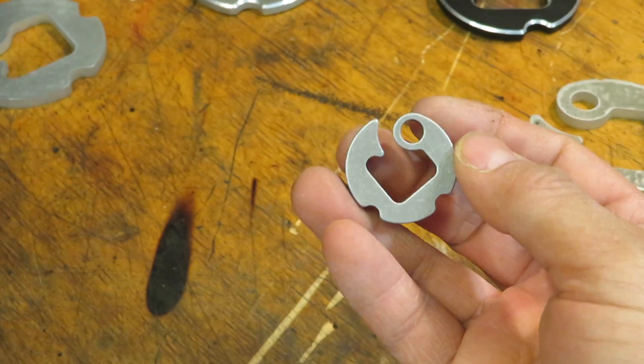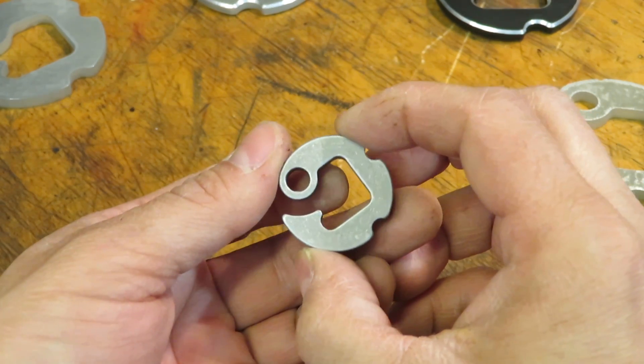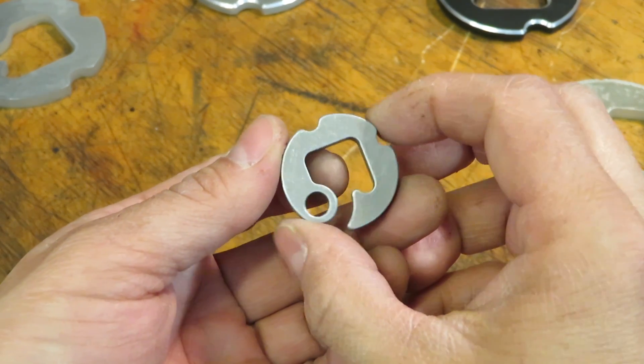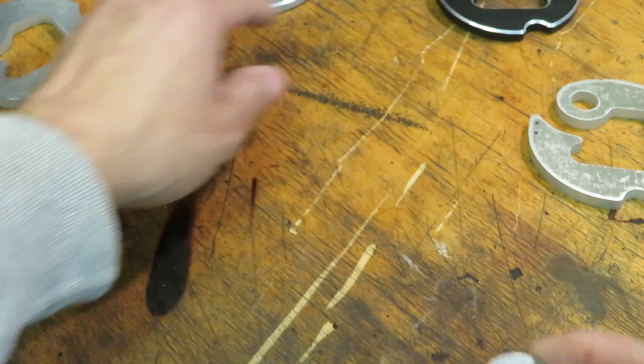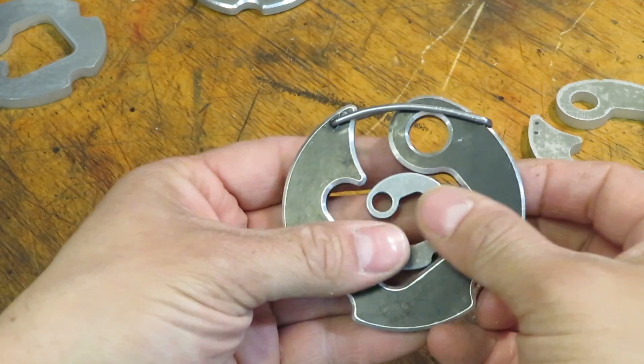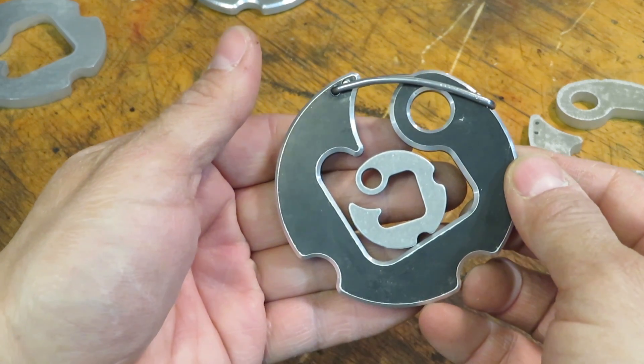Now this measurement right here, this diameter, is very similar to a 50 cent piece. And so it actually fits through the original Blackwall carabiner.